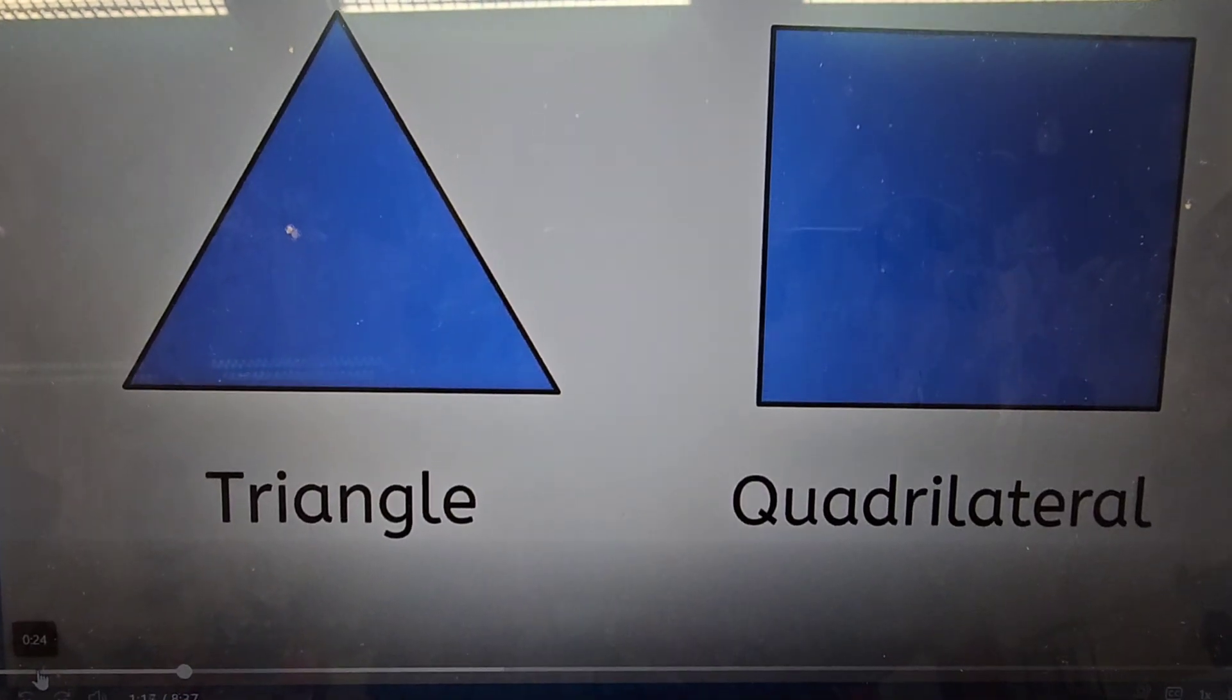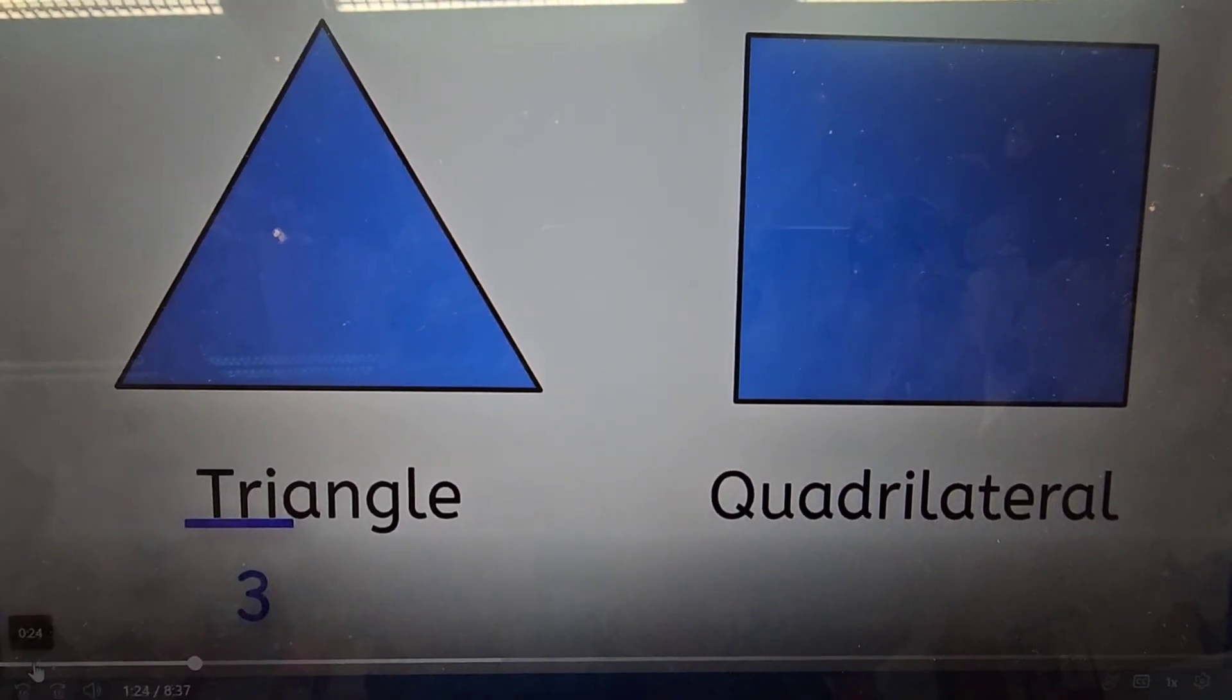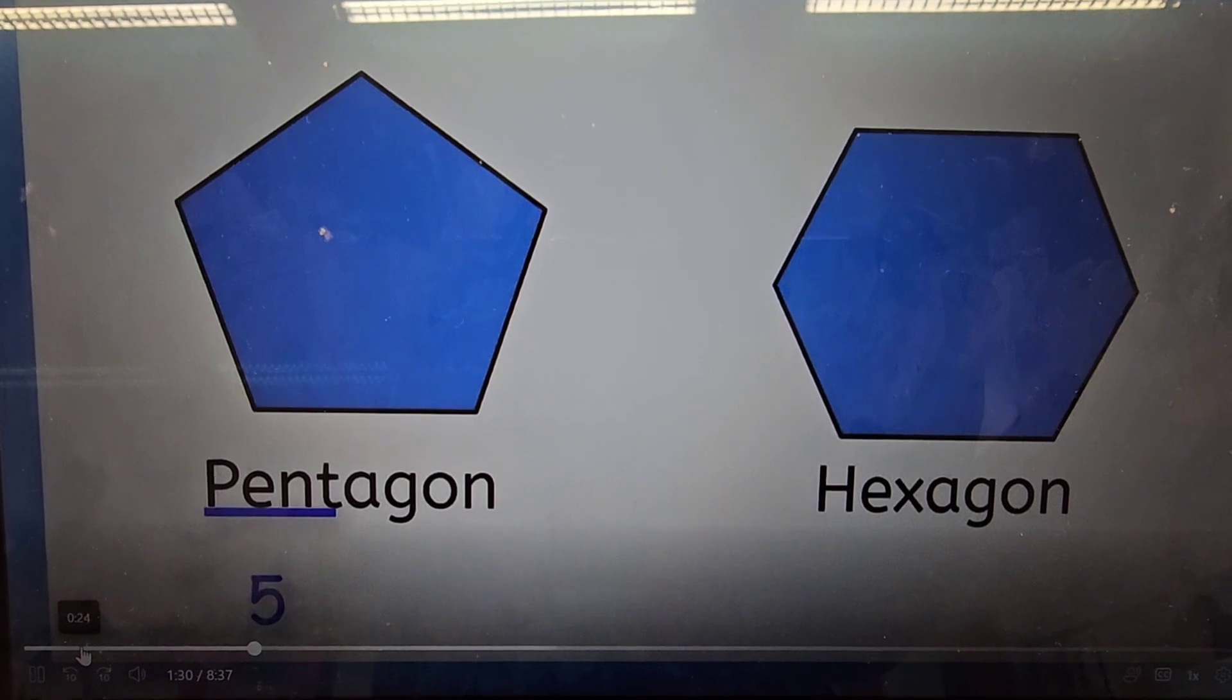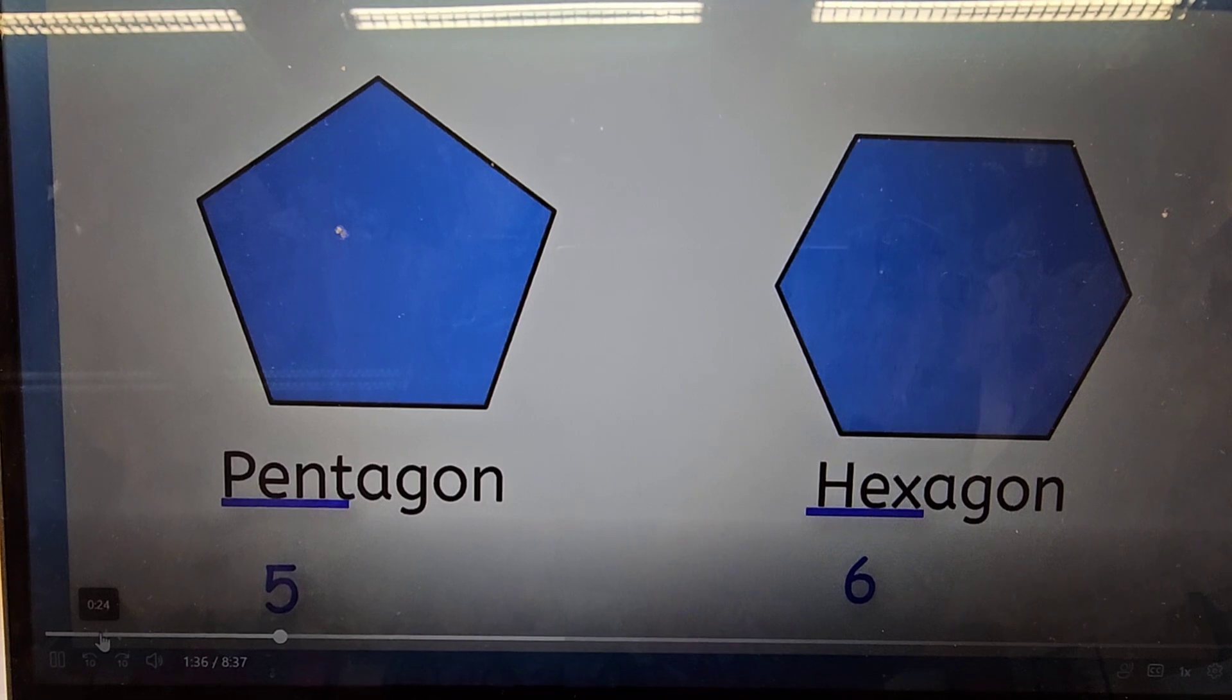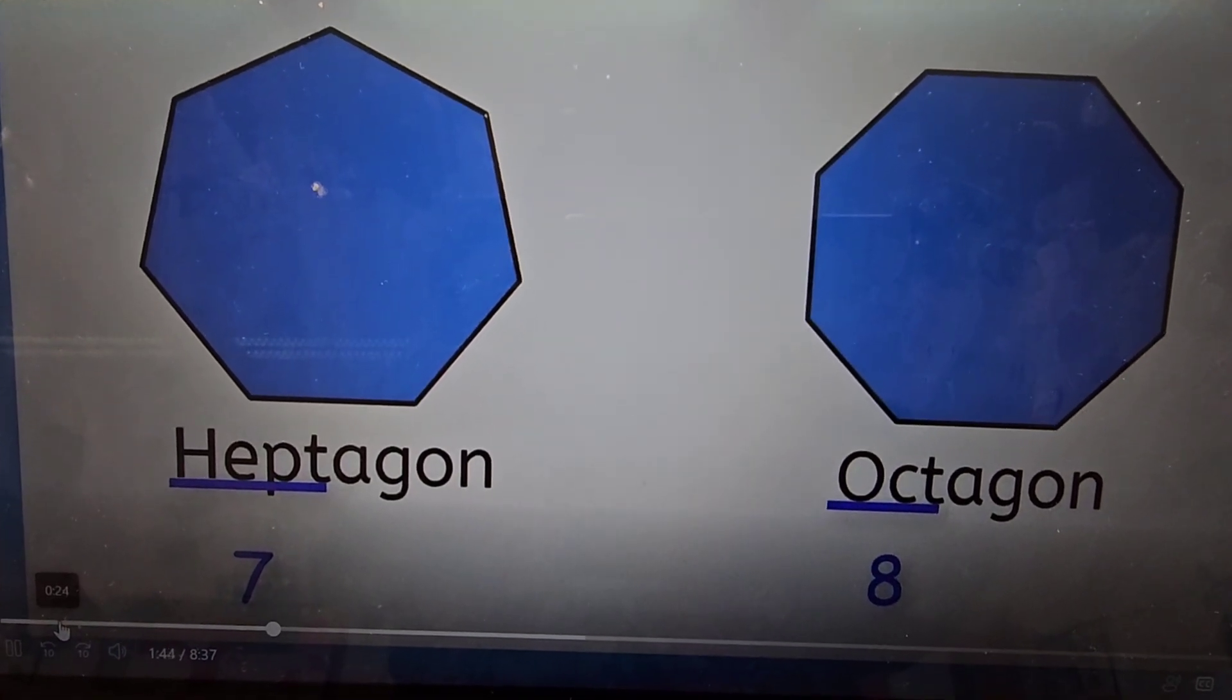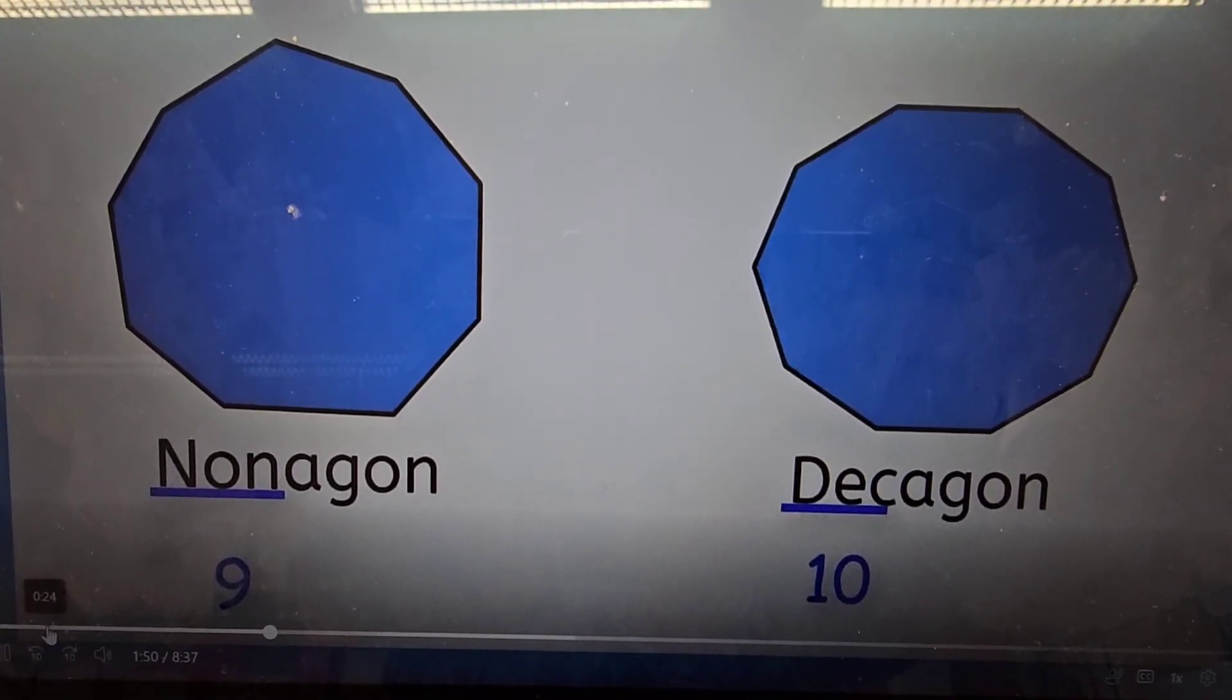Here are some common polygons with three sides all the way up to ten sides. Here is a triangle, where tri means three, and a quadrilateral, where quad means four. A pentagon, where pent means five, and a hexagon, where hex means six. A heptagon, where hept means seven, and an octagon, where oct means eight. A nonagon, where non means nine, and a decagon, where dec means ten.